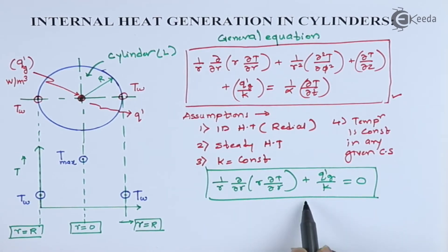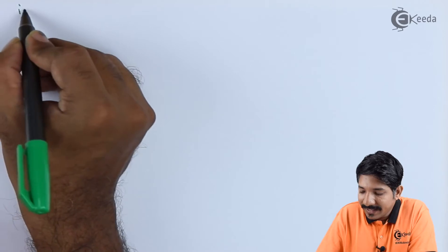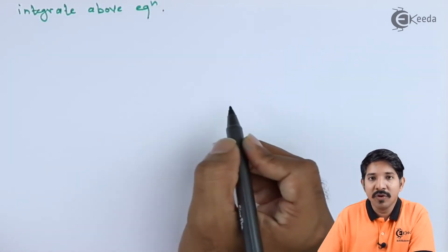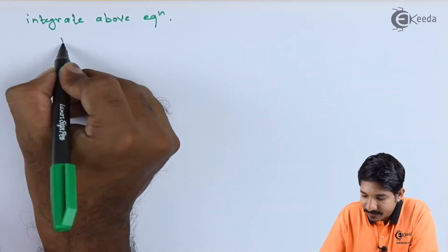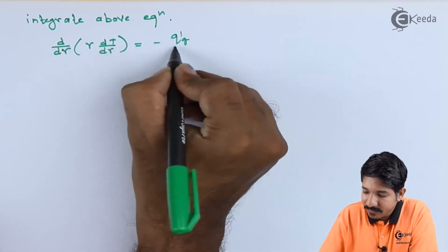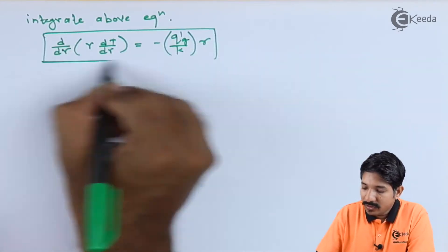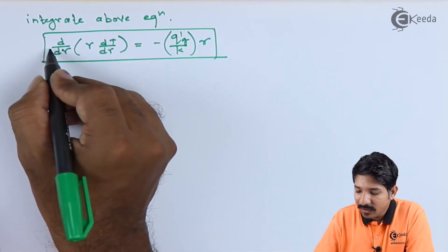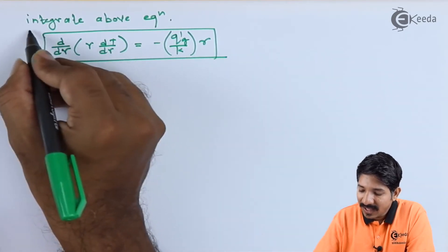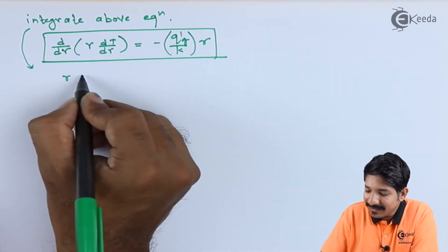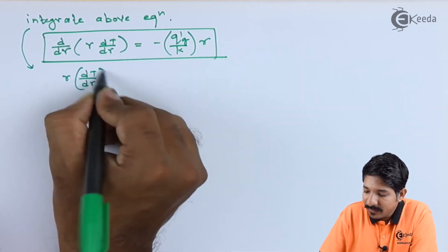Now we must integrate this equation twice to get the temperature profile. If I integrate the above equation and rearrange the terms — whatever R was here I have taken to the other side — integrating gives: r ∂T/∂r.